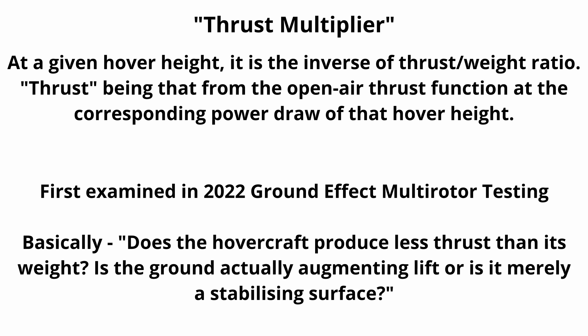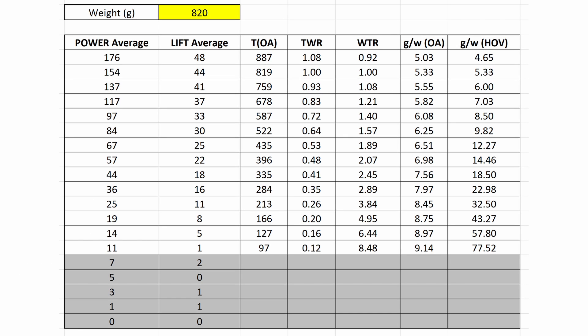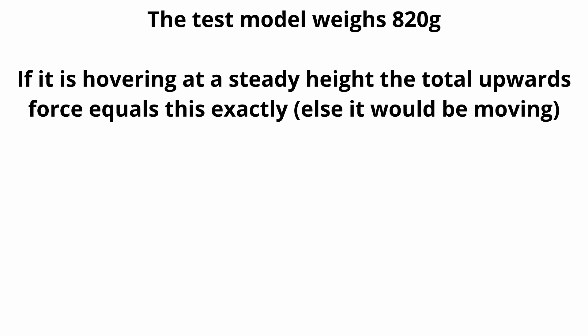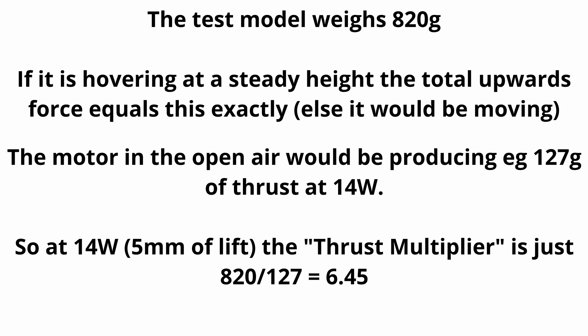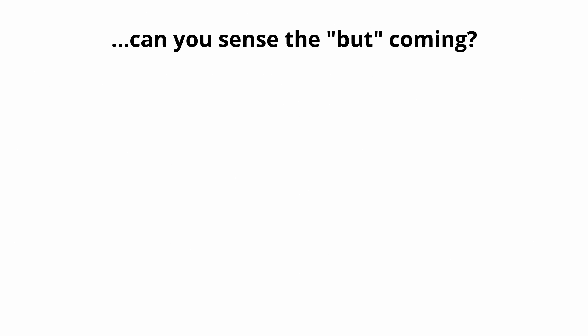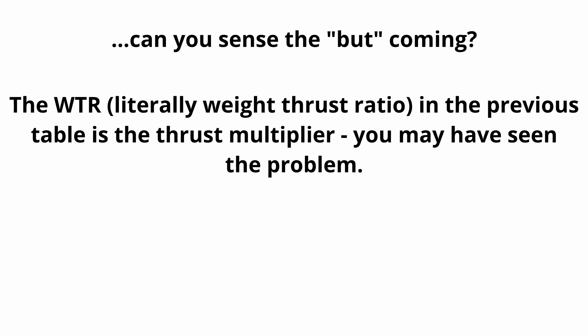Something I've talked about before, and it has come up in the comments, is this concept of a thrust multiplier, which is the inverse of your thrust-to-weight ratio. For example, at 14 watts and 5 millimeters of lift, that motor and propeller — if it were in the open air — would be producing 127 grams of thrust. The actual weight of this thing is 820 grams. So it's as if that thrust has been multiplied about six and a half times. That sounds pretty fantastic, and it is — you're getting a thrust multiplier. It's a valid thing to talk about. It just falls away very, very quickly as height away from the ground increases.